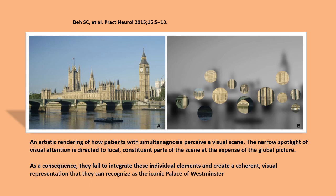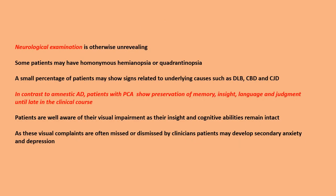This figure is an artistic rendering of how patients with simultanagnosia perceive a visual scene. The narrow spotlight of visual attention is directed to local constituent parts of the scene at the expense of the global picture. As a consequence, they fail to integrate individual elements into a coherent visual representation — for example, failing to recognize the iconic Palace of Westminster.